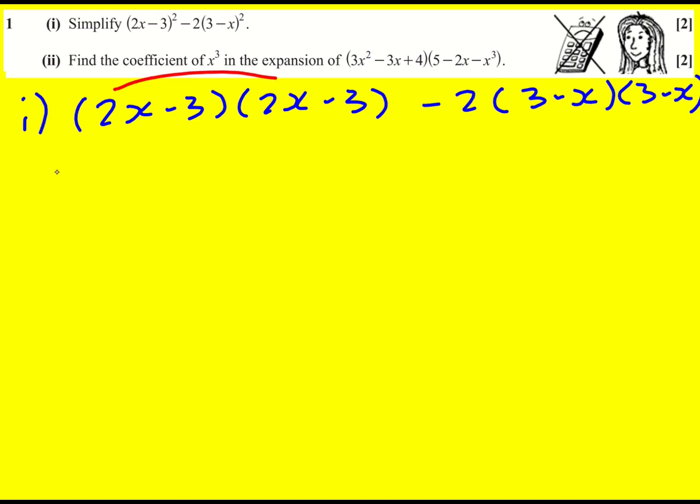Right, first bracket, I'm going to do it slowly, so we're going to get 4x squared, going to get minus 6x, minus 6x plus 9. The more you practice these, the more quickly you can just look at it and say, oh, it's going to be 4x squared, and I'm going to get two lots of this minus 6, that's going to give minus 12x, and then a plus 9.